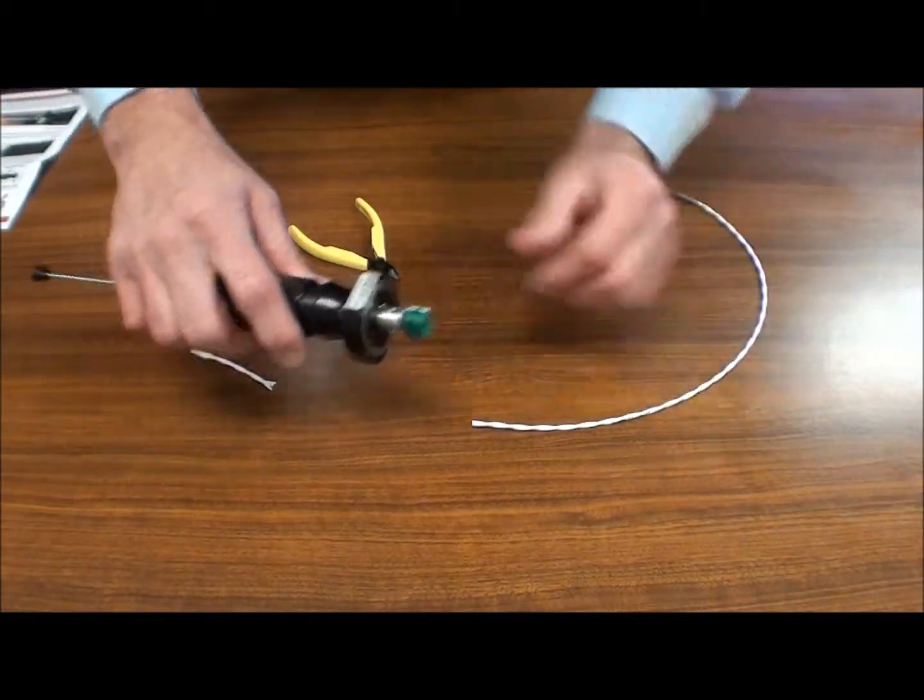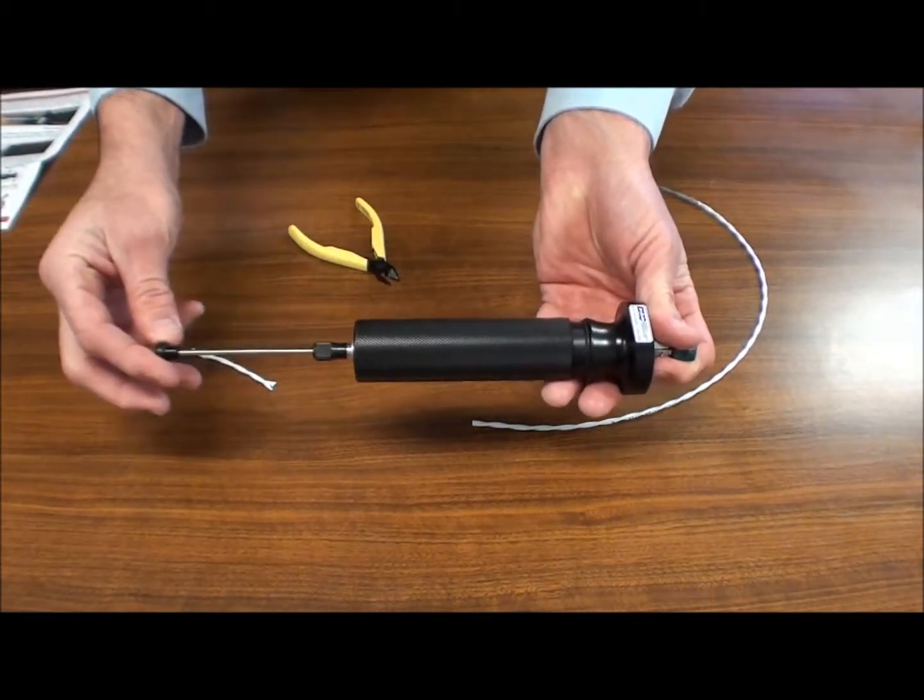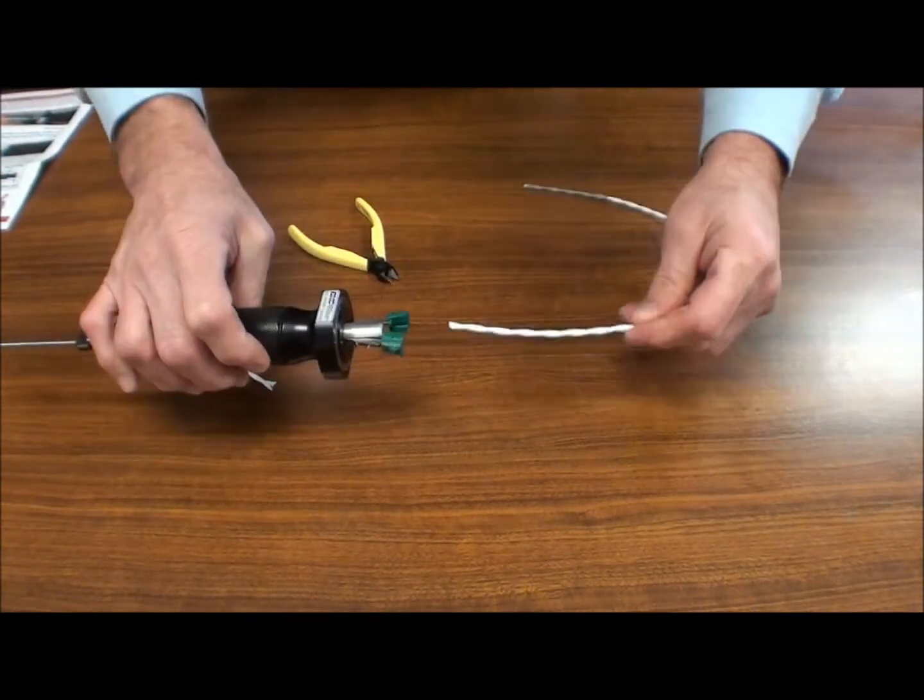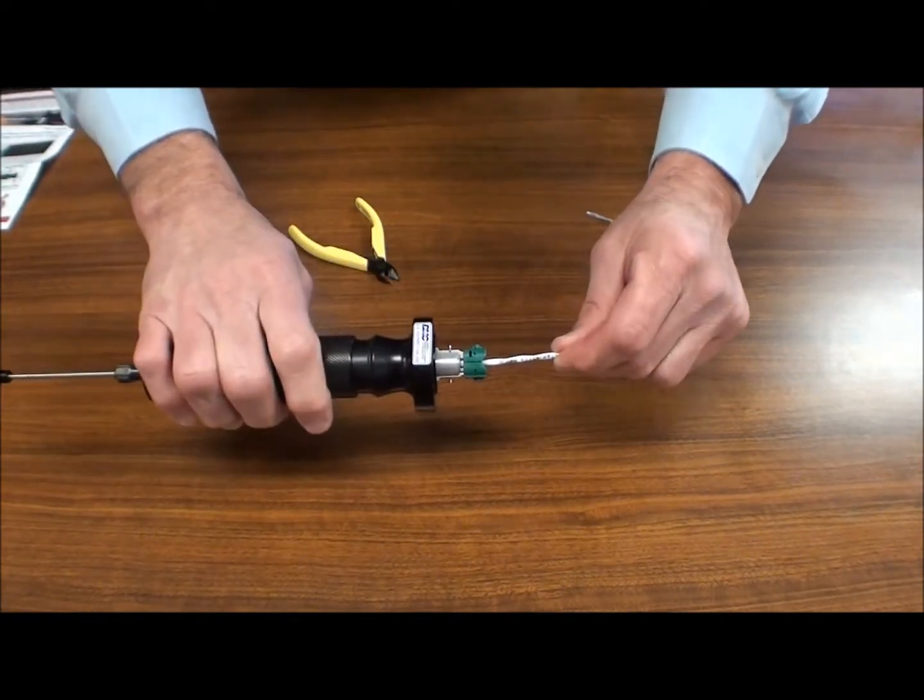Again, very simple. You can adjust your strip length gauge, pull back your actuator arm, insert your wire, push the actuator arm back down.